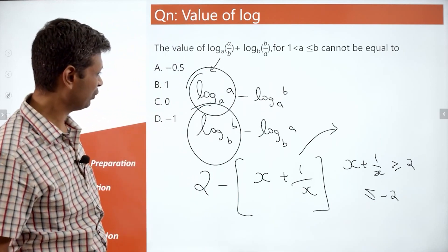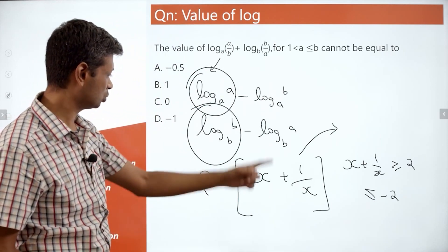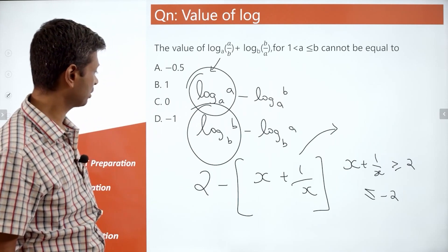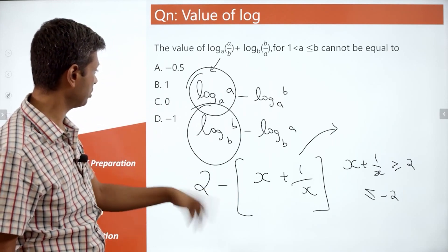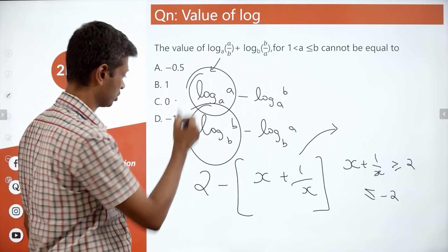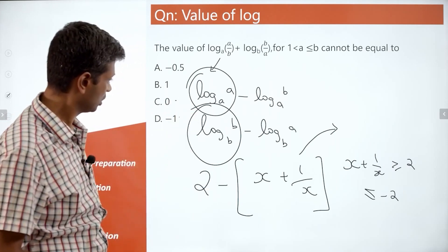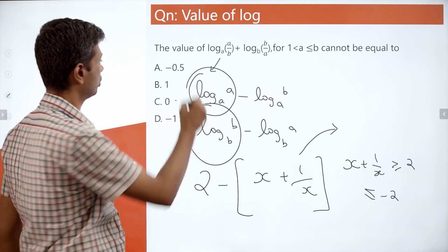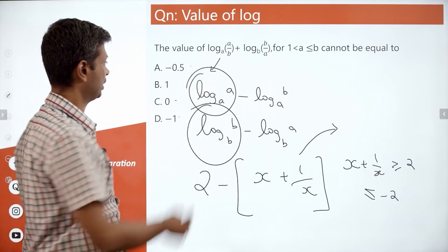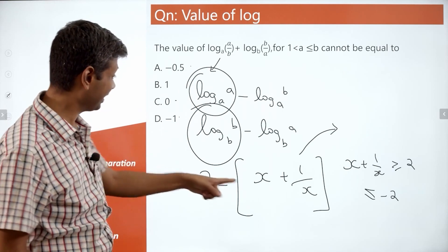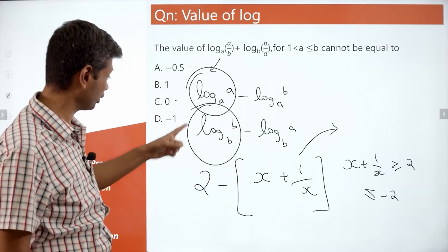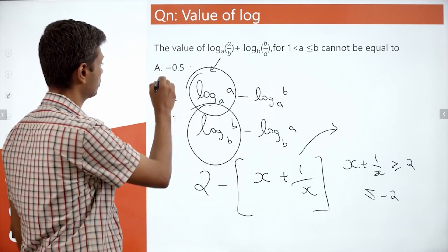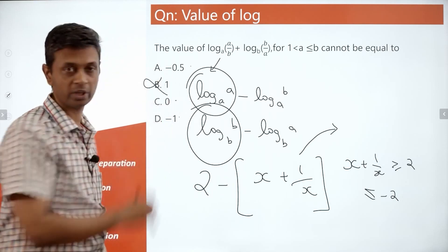So, if x plus 1 by x were 2, the expression will be 0 — that's possible. If it were 3, it can be minus 1 — that's possible. If it were minus 2.5, it could be minus 1.5 — that's possible.